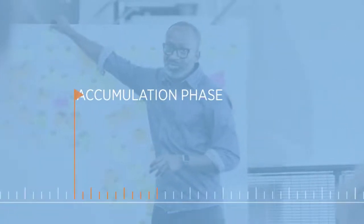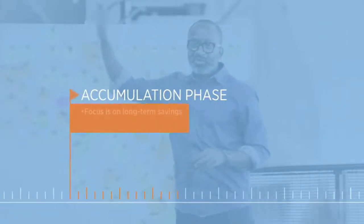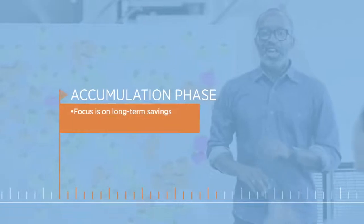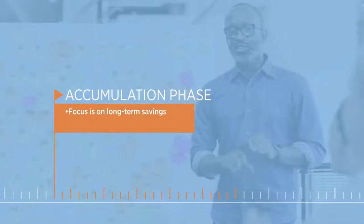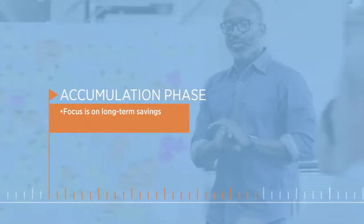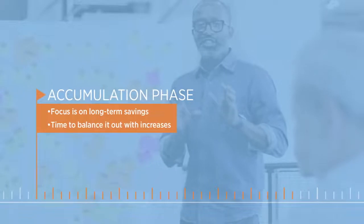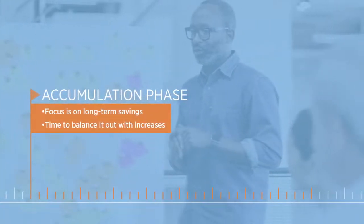As you prepare for retirement, sequence of returns matters less because your focus is on long-term savings. If you experience a down year during this accumulation phase, there is time to balance it out with a potential increase in future years, since you are not yet taking withdrawals.